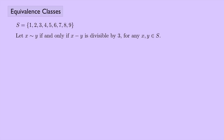Now let's look at the element 1 and ask which things in the set are equivalent to 1 using this definition. We have 1 itself; 1 minus 2 is negative 1, not divisible by 3; 1 minus 3 is negative 2, not divisible by 3; but 1 minus 4 is negative 3, which is divisible by 3, so 4 is equivalent to 1. Continuing: 1 minus 7 is negative 6, divisible by 3, so 7 works. 1 minus 8 and 1 minus 9 do not work.